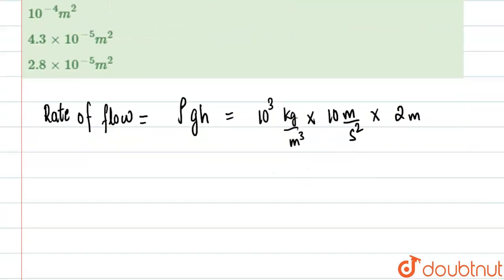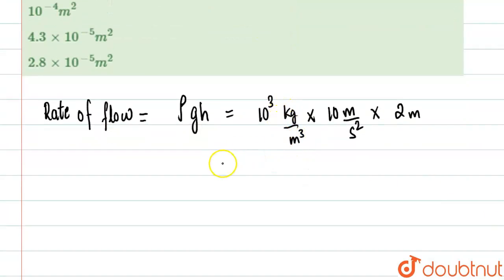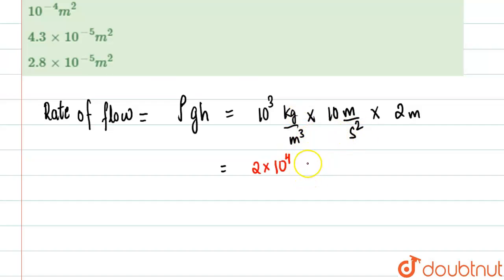So from here we are going to get 2 into 10 to the power 4. After cutting everything, what we'll get is kg per second. This is the rate of flow we're going to get.